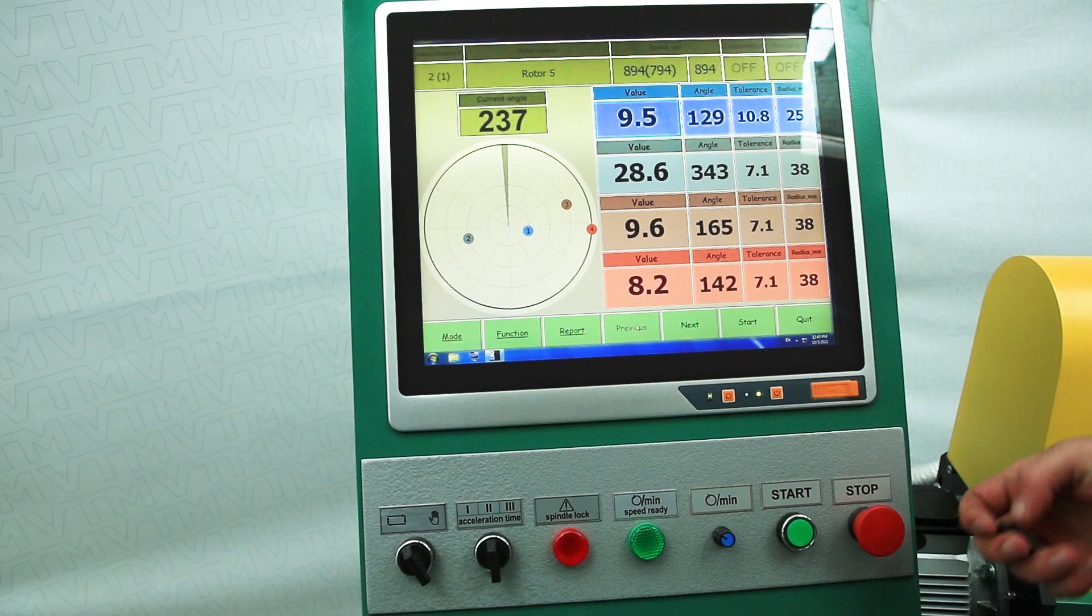On the second plane, we hang a weight of 28 whole 6 tenths of a gram, again choosing the right angle.